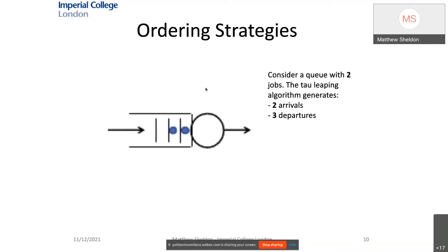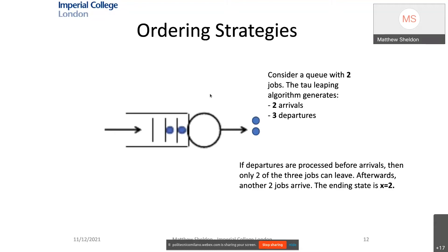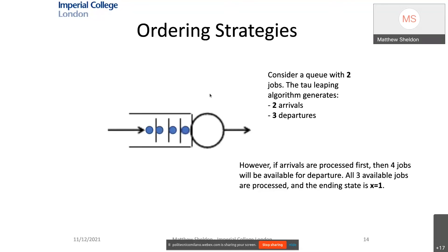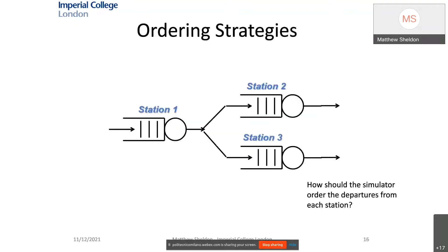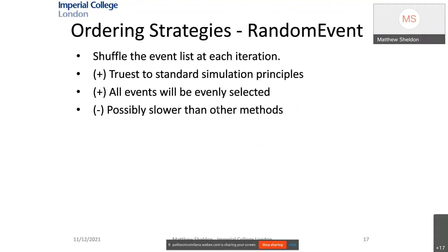However, there are concerns to address. Performance metrics are often sensitive to the ordering of events. For example, in a simple M/M/1 queue with two jobs and tau leaping suggesting two arrivals and three departures: if departures are processed first the ending state is x=2, but if arrivals are processed first the ending state is x=1. This can create bias in performance metrics, and the problem compounds in networks of queues. We have defined a number of ordering strategies, the simplest being random event ordering, which involves shuffling the event list at each iteration.